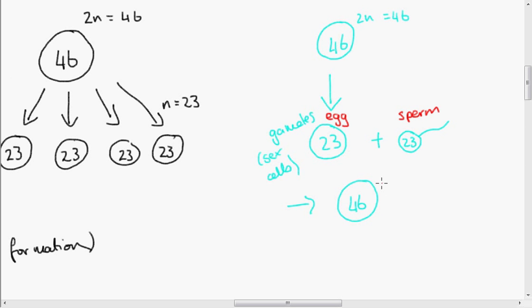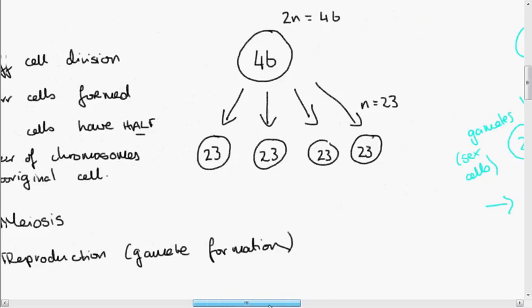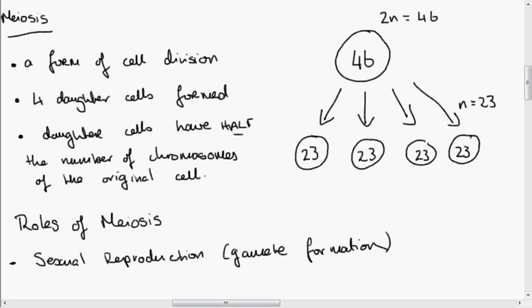Therefore, meiosis is essential for sexual reproduction in a multicellular organism. Because if meiosis did not occur, if the gametes had the full set, the 46 chromosomes, then the new individual would have too many chromosomes. And that cell would divide, and all of the cells in the organism would have too many chromosomes. So meiosis is essential for sexual reproduction, the formation of gametes.